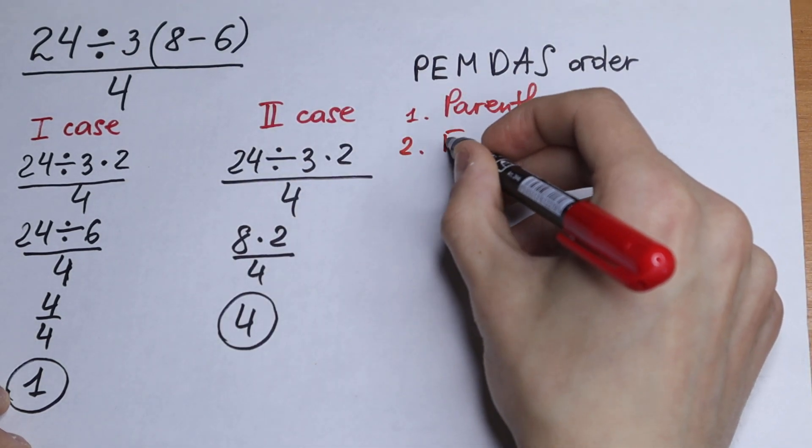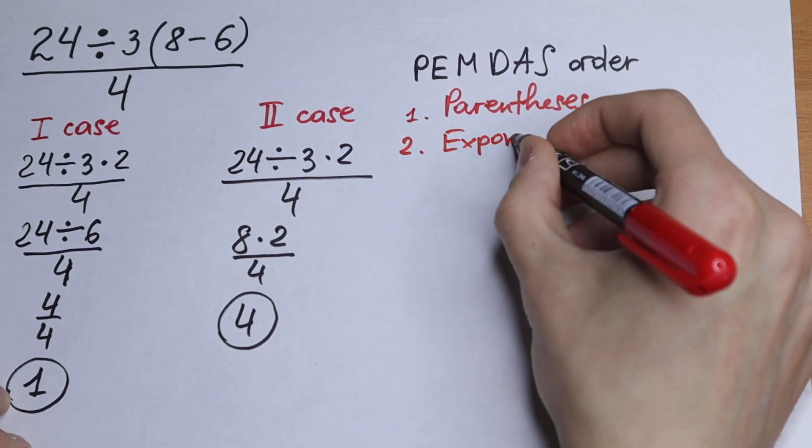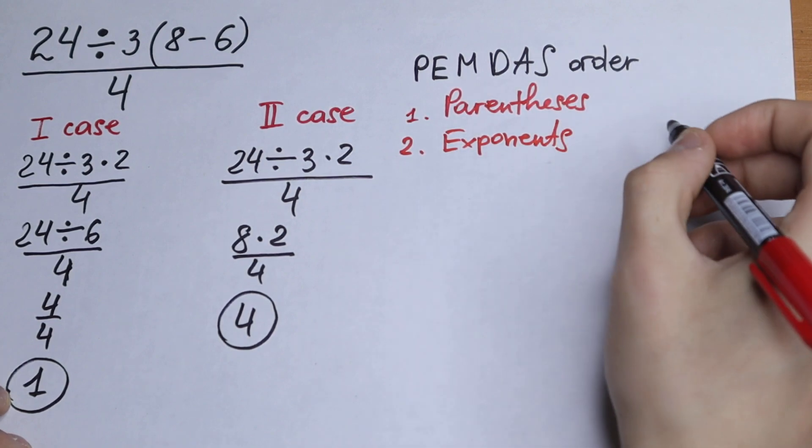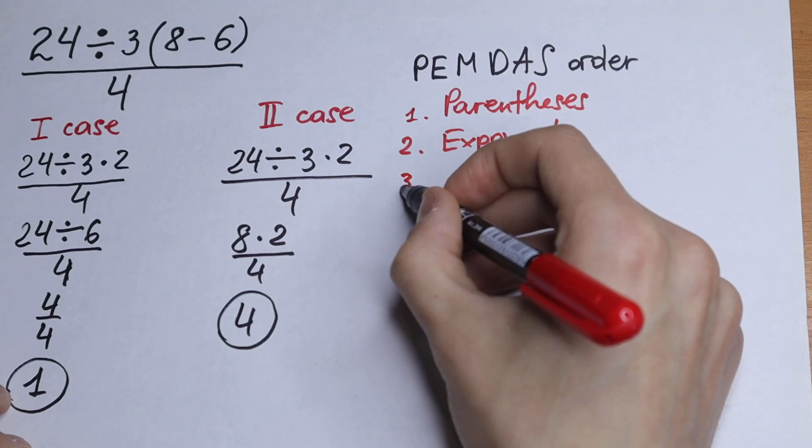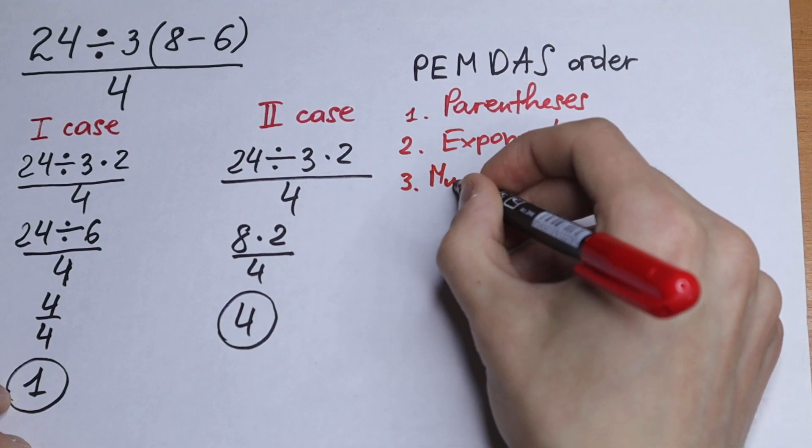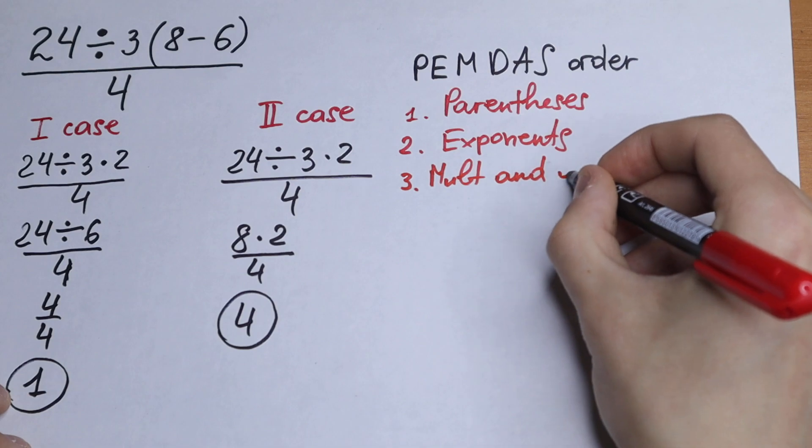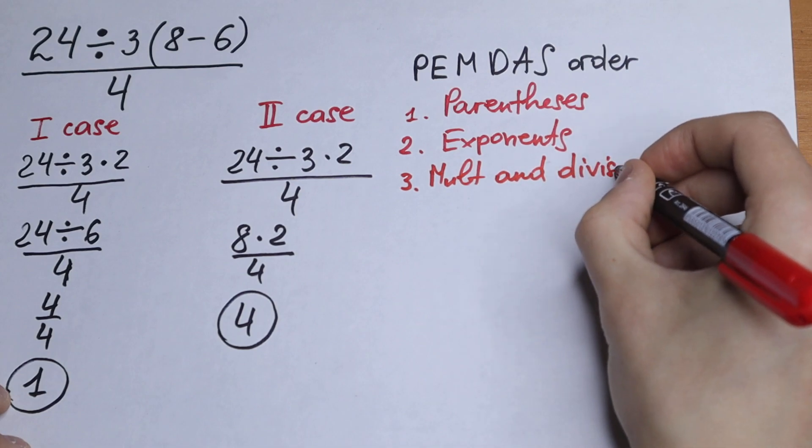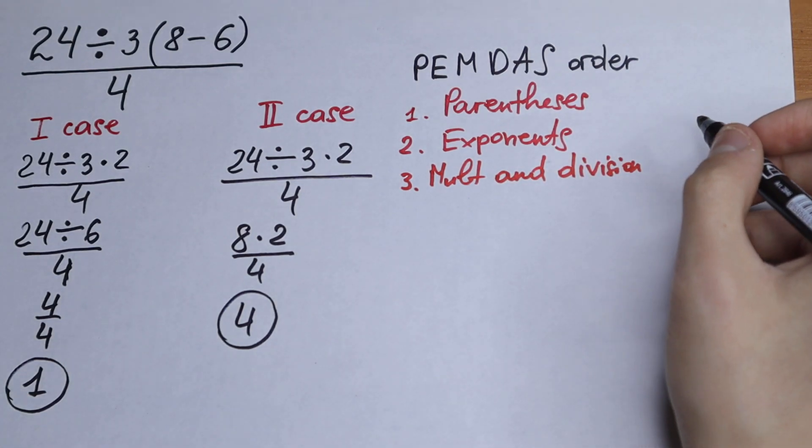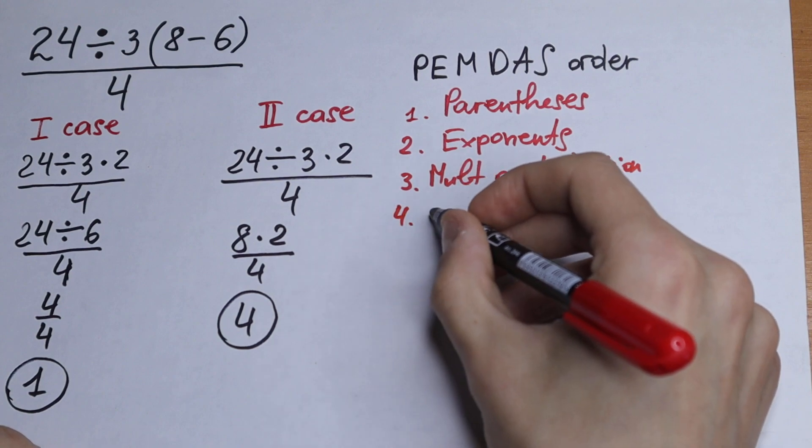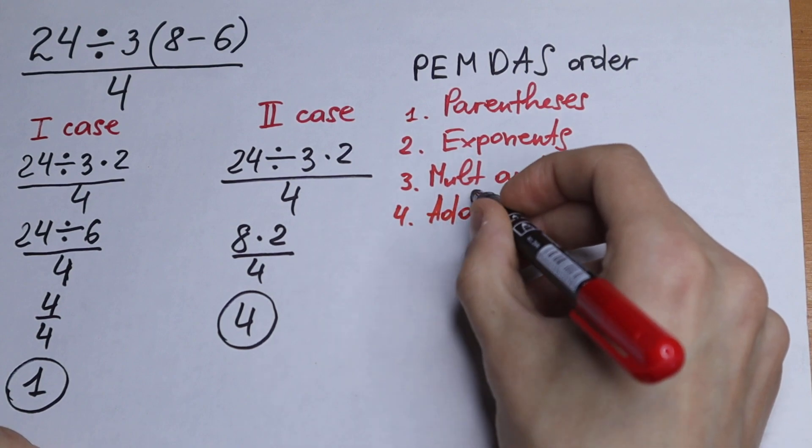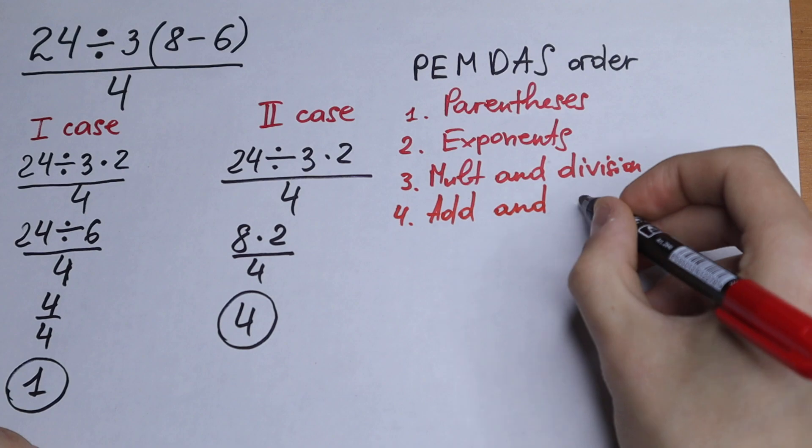Second, exponent. We don't have exponents. Third, multiplication and division. And the last one, the fourth, is addition and subtraction.